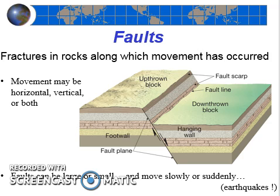Faults can also be very large or quite small, and the movement along faults can be very slow or it can occur suddenly. When a fault moves suddenly, this is when earthquakes occur. In the next few slides, we're going to learn to differentiate among the different types of faults by the types of movements occurring. But before we get there, we need to get some terminology down.